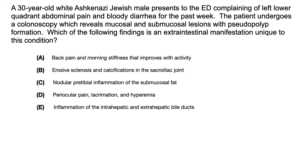Which of the following findings is an extraintestinal manifestation unique to this condition? A. Back pain and morning stiffness that improves with activity. B. Erosive sclerosis and calcifications in the sacroiliac joint. C. Nodular pre-tibial inflammation in the submucosal fat. D. Periocular pain, lacrimation, and hyperemia. Or E. Inflammation of the intrahepatic and extrahepatic bile ducts.